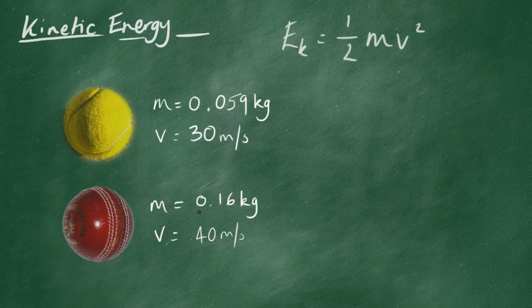Cricket ball, higher mass, 0.16 kilograms. Velocity from a bowler's arm is going to be about 80 miles per hour, about 40 metres per second. So, let's practice using our equations.